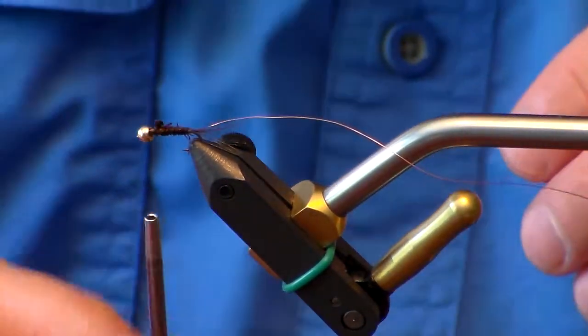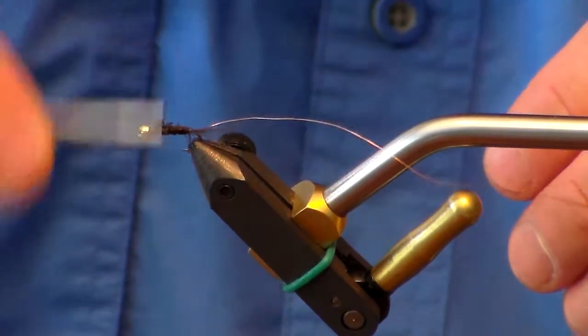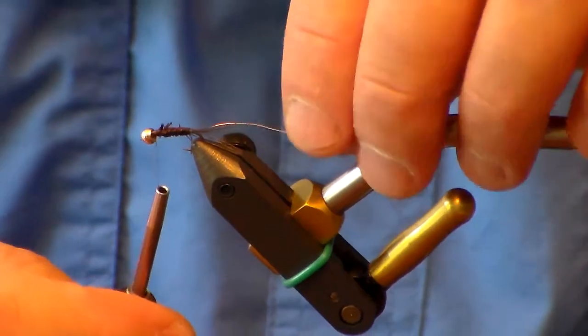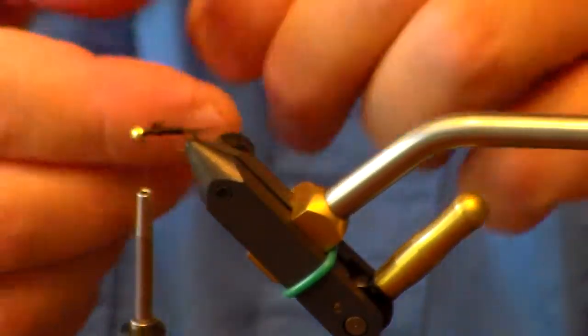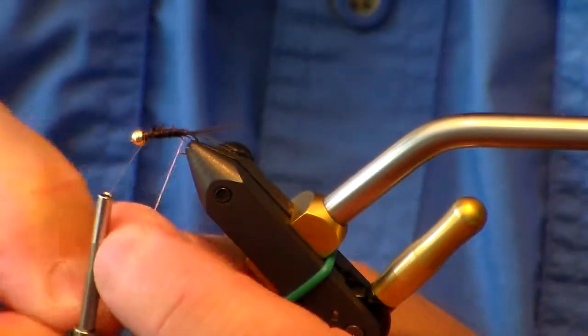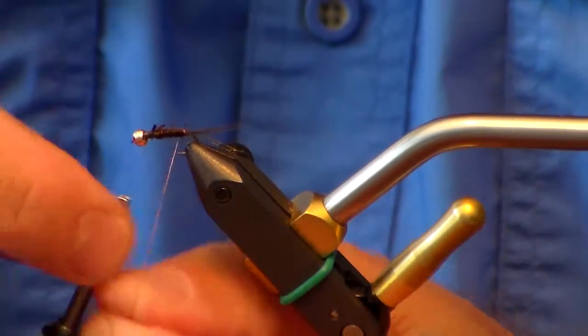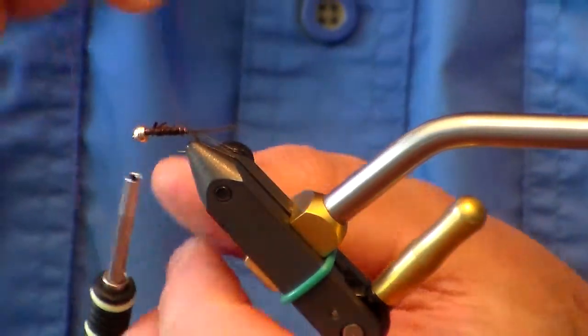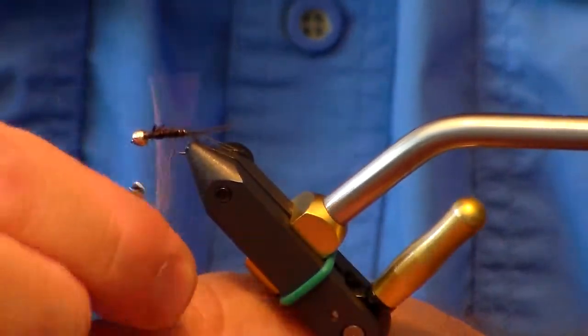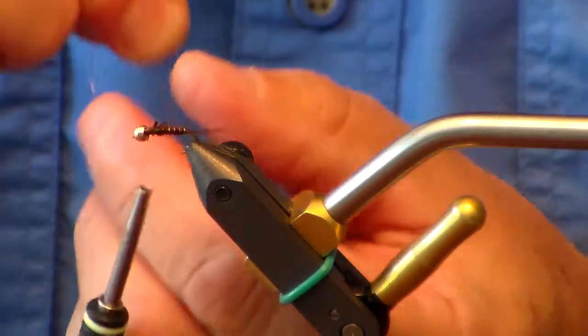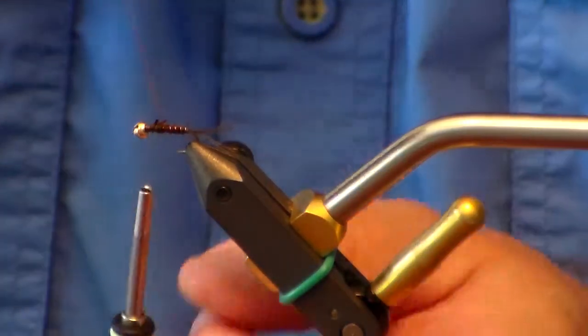Finish wrapping this here. Then I want to take my copper wire and I want to counter rib the copper wire, again at a 45 degree angle. And I would put six or seven turns.